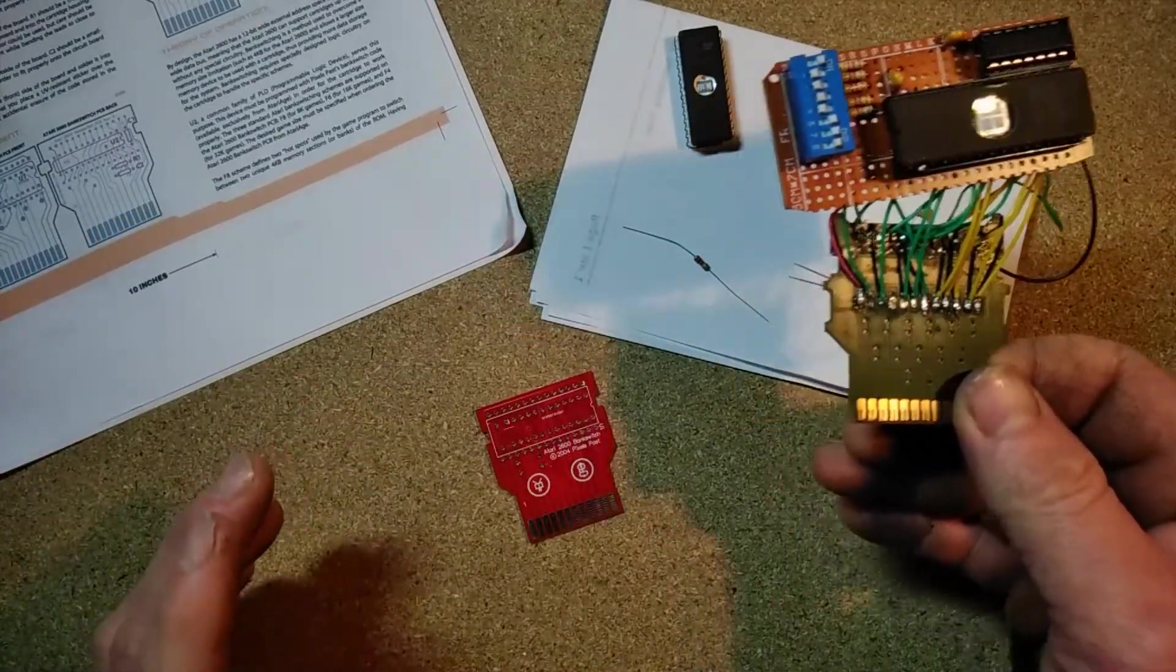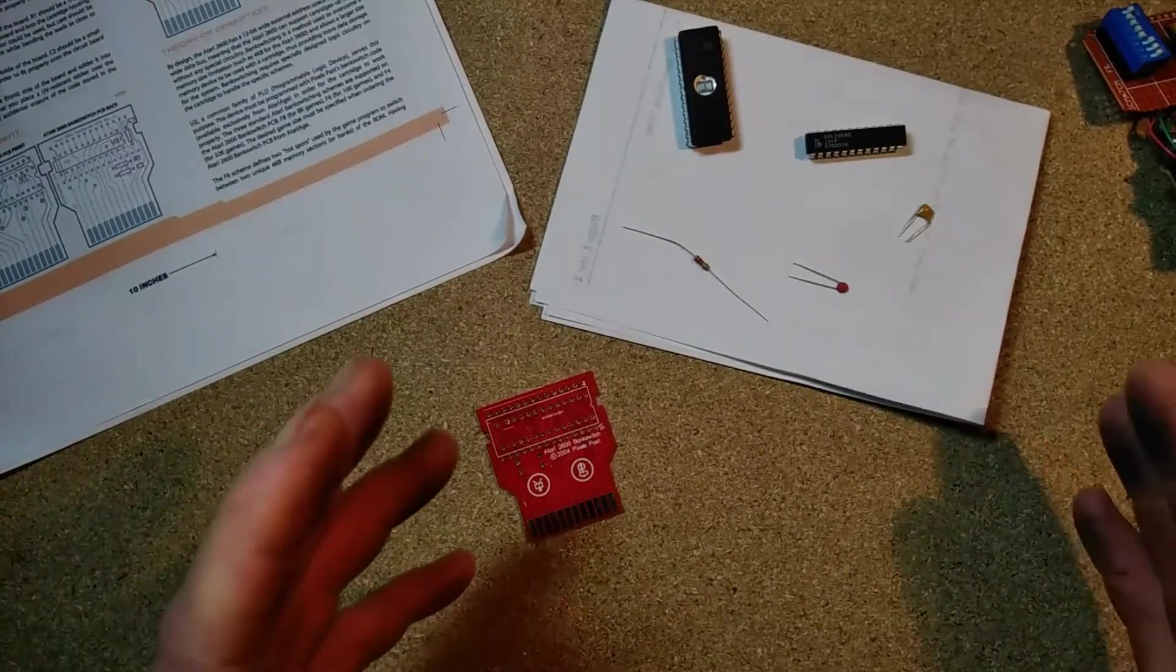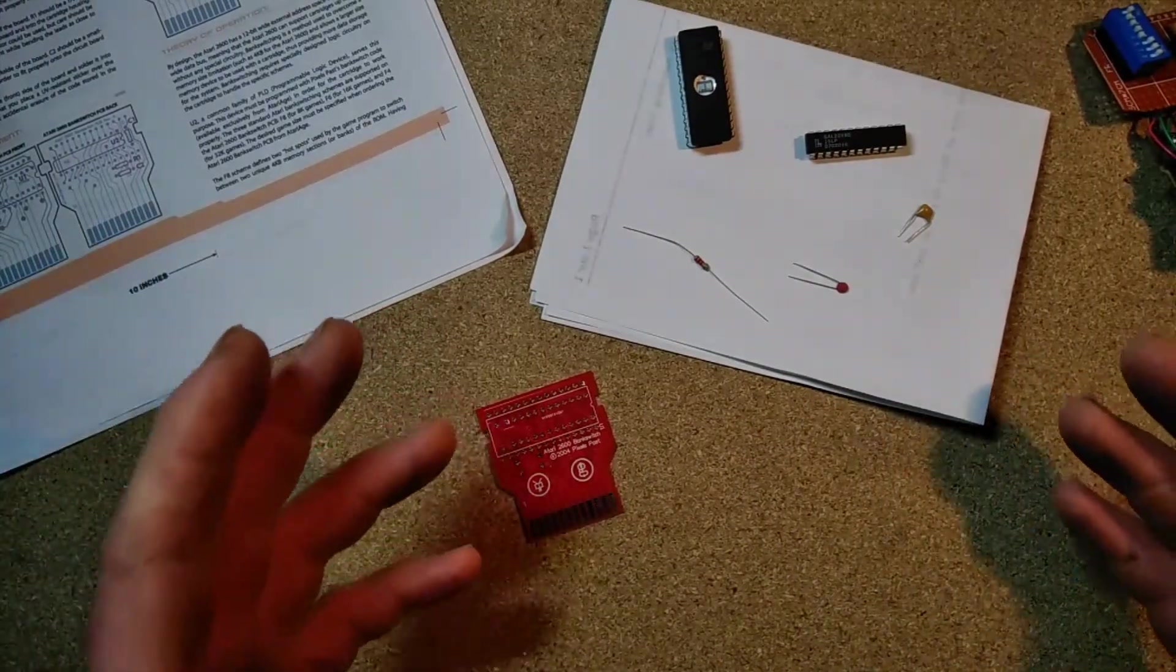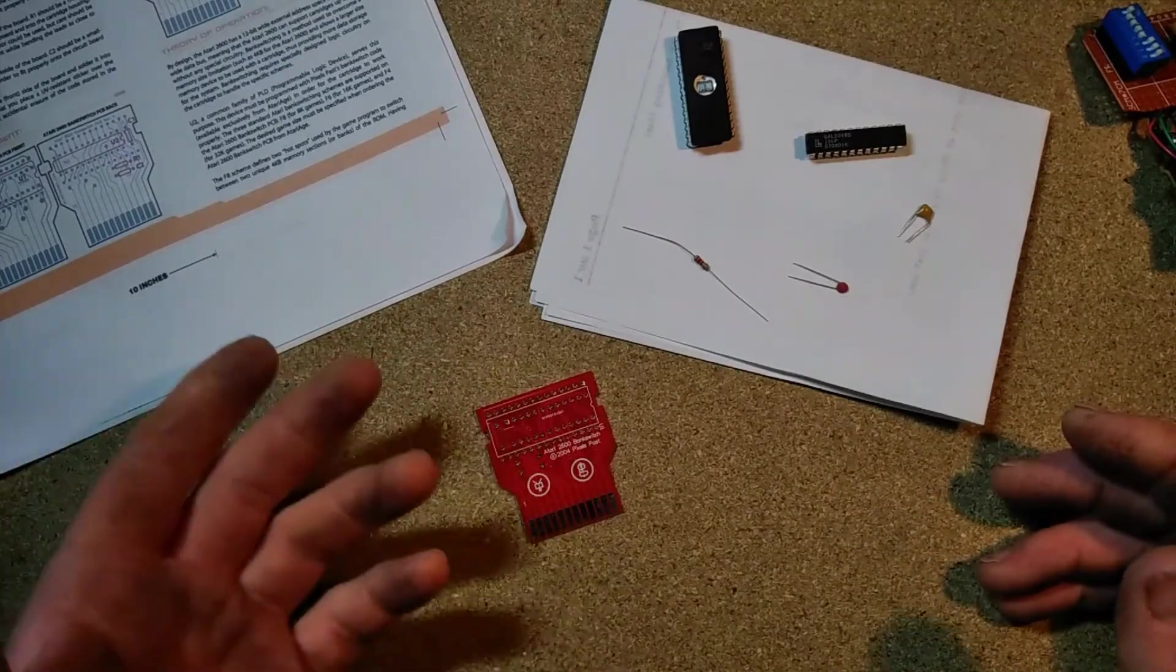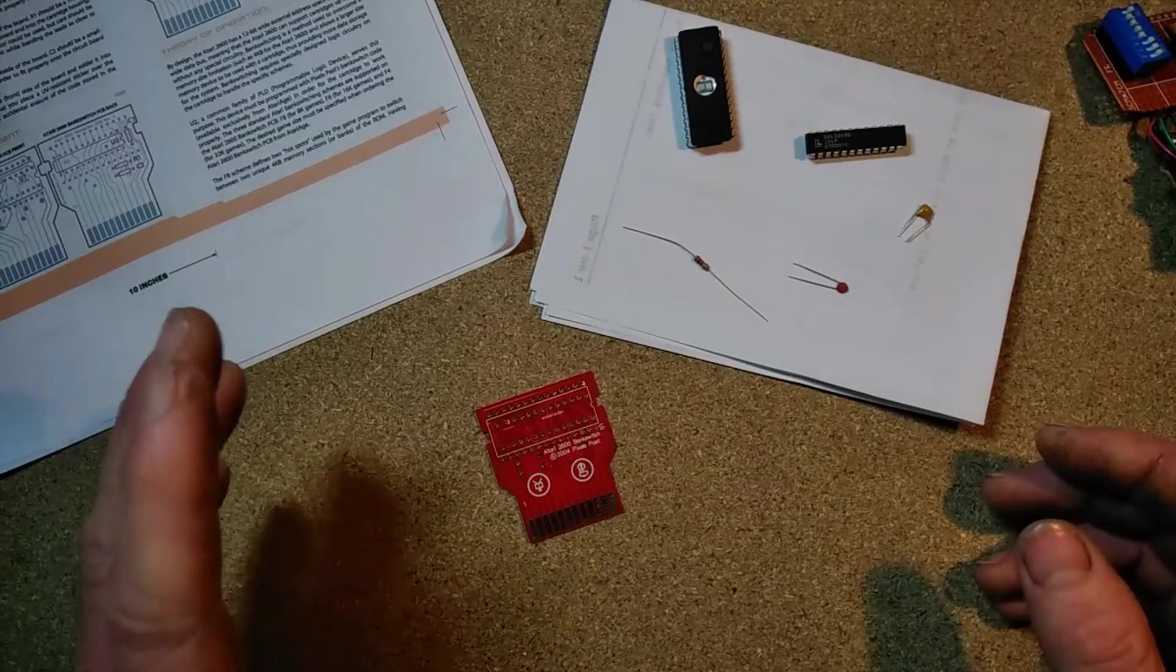God forbid, ET the Extraterrestrial. What you need is a cartridge that can take the larger ROM files - 8 kilobytes, 16 kilobytes, 32 kilobytes. Looking around on the internet I found a DIY cartridge PCB.